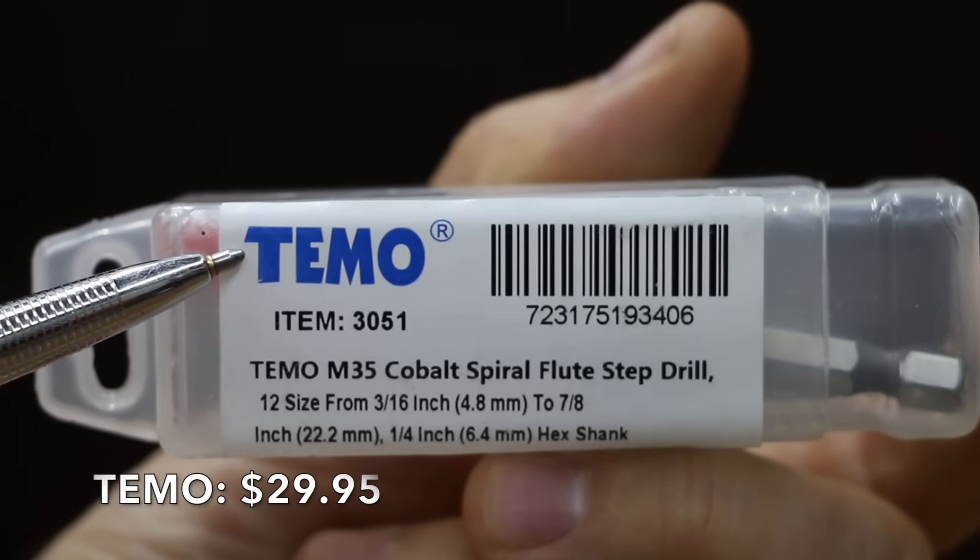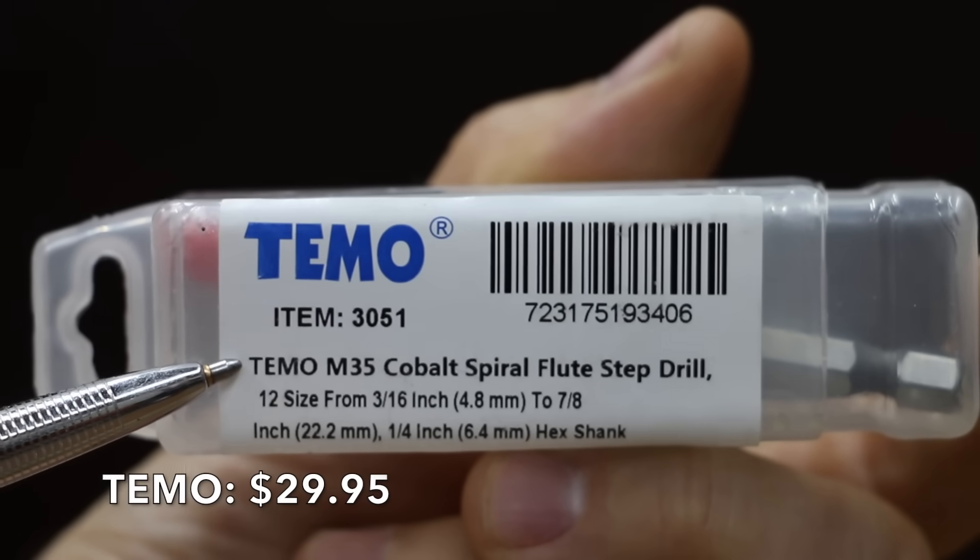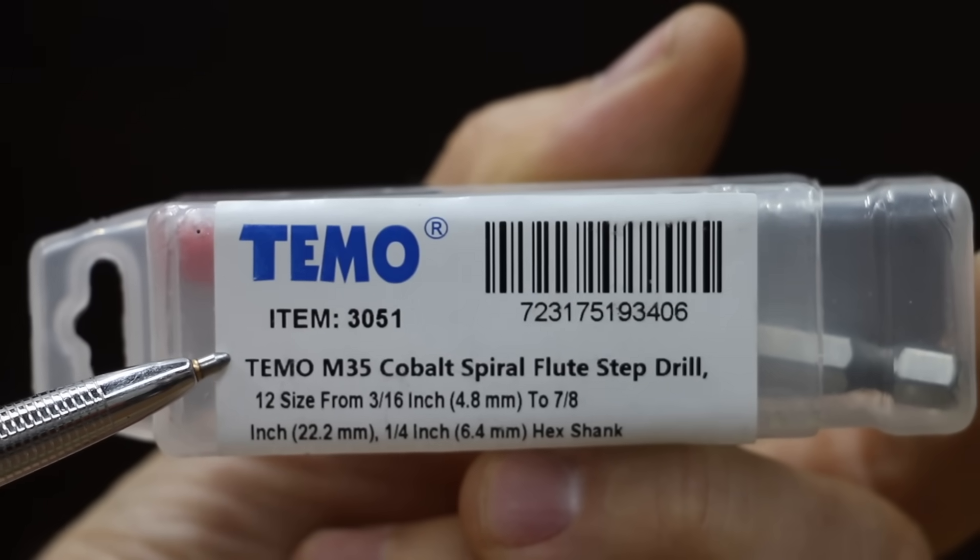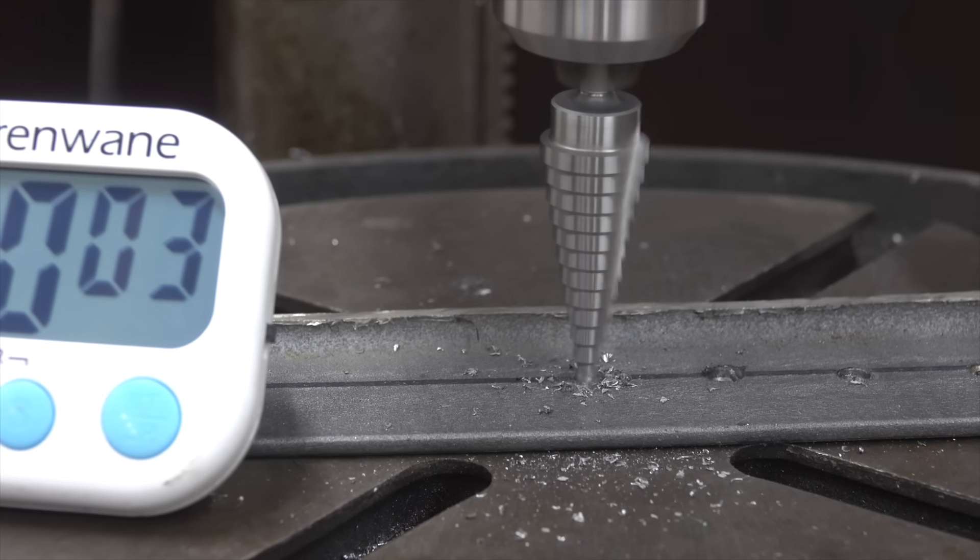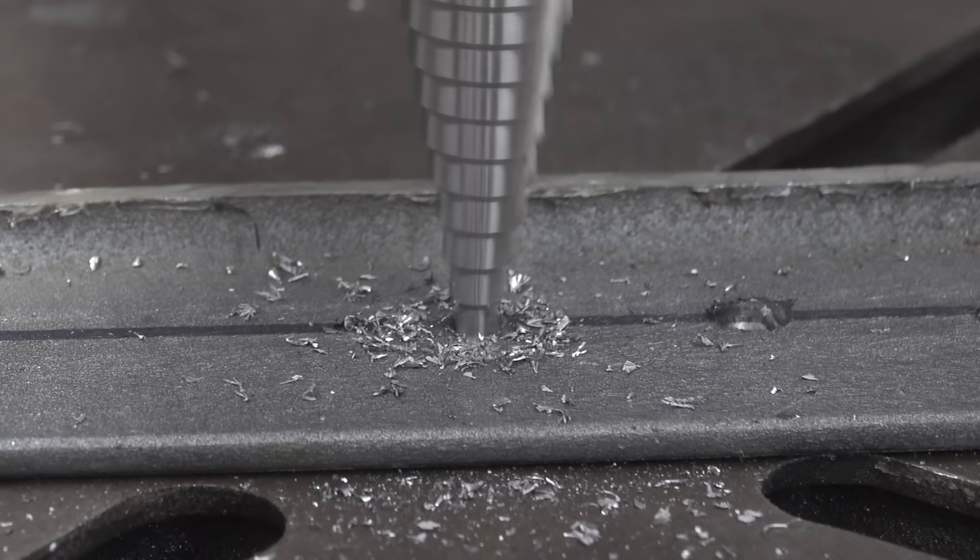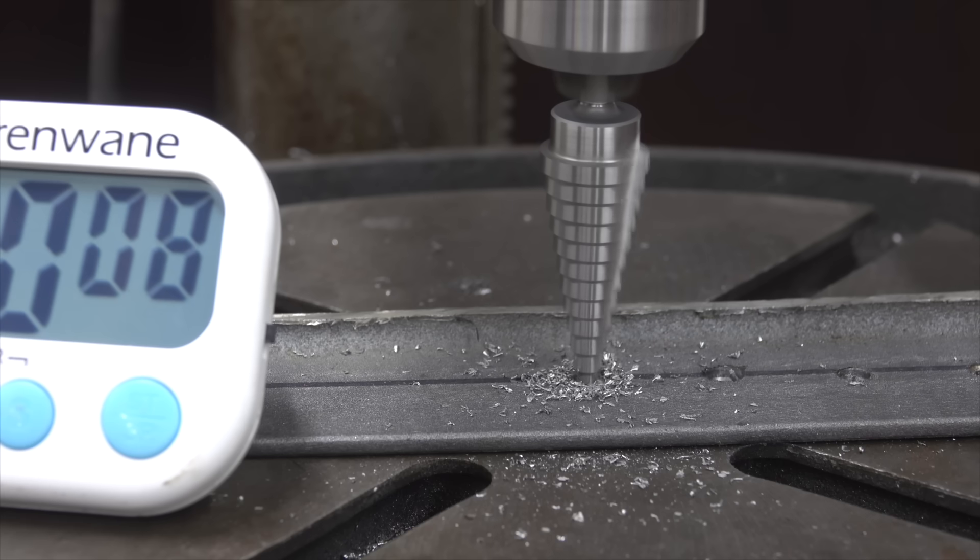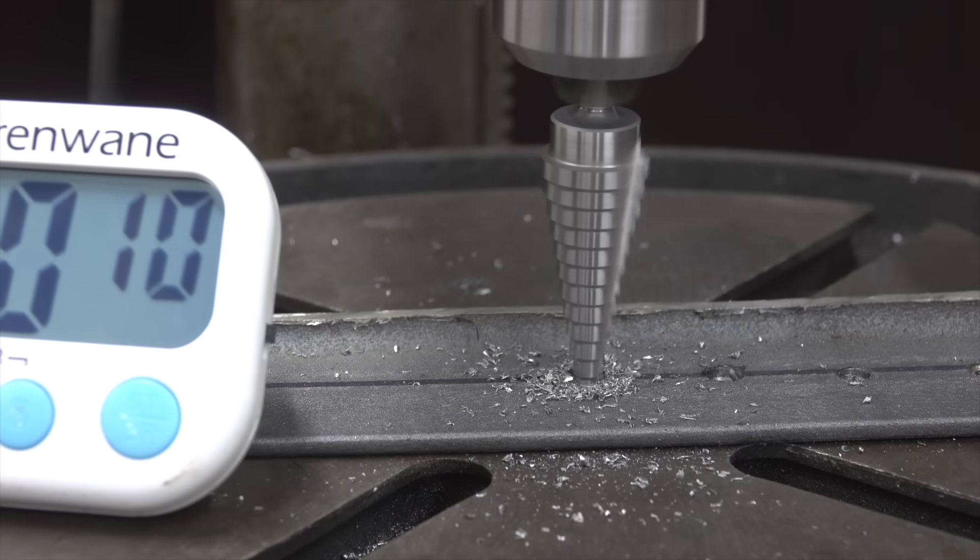At $29.99, the Teemo brand seems like a great price for an M35 Cobalt Spiral Flute Step Drill. I couldn't find any information on where this bit is manufactured. The $30 Teemo bit simply amazed with its cutting speed nearly matching the DeWalt twist drill with an 11 second time, so the Teemo takes the lead from Hercules.